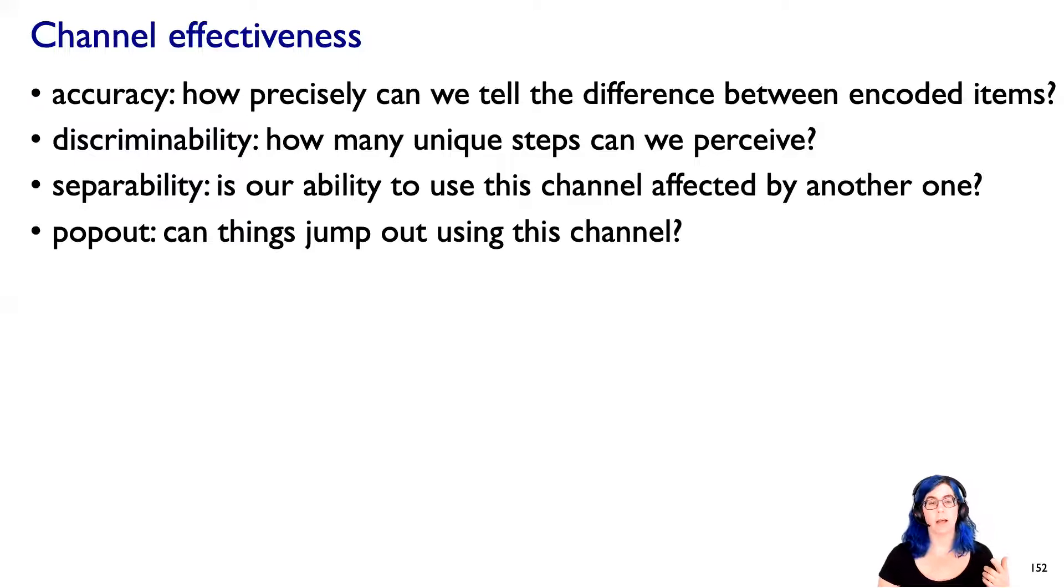One is accuracy. How precisely could we tell the difference between items that have been encoded with a particular channel? Can people succeed in decoding accurately? Another is discriminability. How many unique steps can we see with the channel? And of course, does this match up with the number of levels in an attribute? How separable are they? Does one channel step on the toes of another channel? The answer, sadly, often is yes. And then popout. Can things actually jump out at us without the need for conscious attention using this channel?